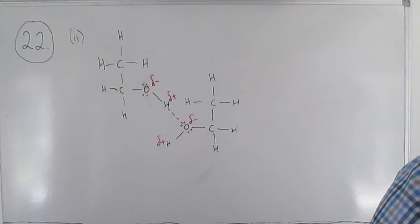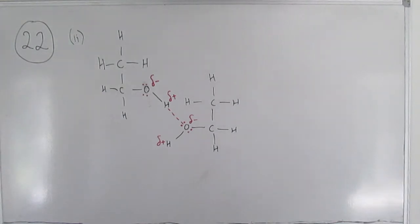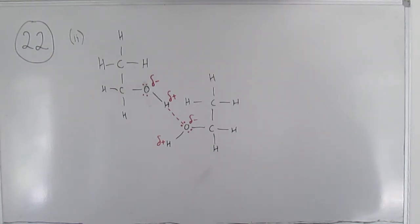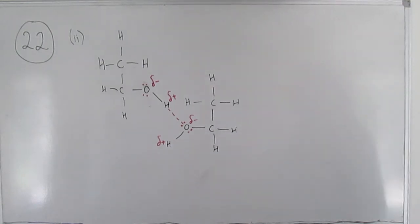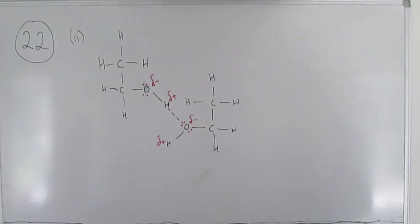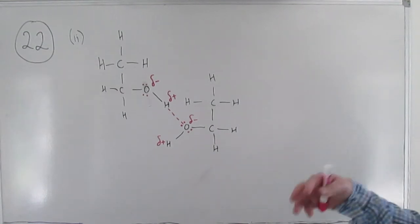It asks whether glycerol would have a higher or lower boiling point. The point about glycerol is that instead of just one OH group per molecule, you have three, so you've got a lot more hydrogen bonds per molecule to break. That takes more energy, so the boiling point will be higher. It's only one mark, so all you need to say is that glycerol has the higher boiling point because it has more hydrogen bonds per molecule to break. If it were more marks, you'd elaborate on the energy required.